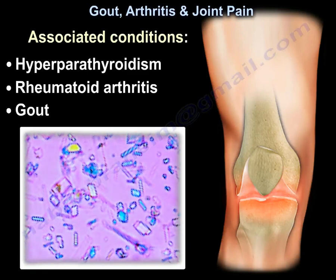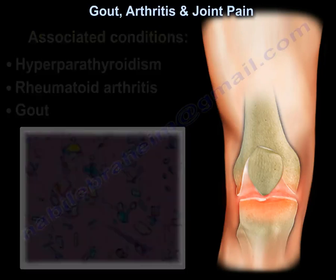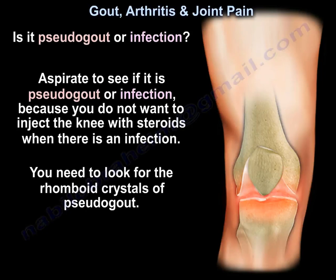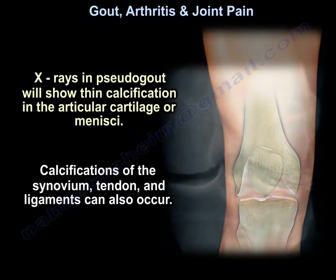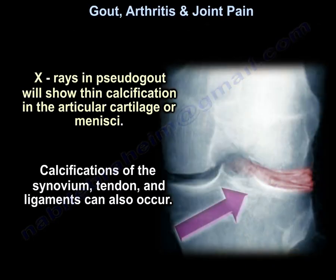Associated conditions with pseudogout include hyperparathyroidism, rheumatoid arthritis, and gout. You must aspirate the joint to determine if it is pseudogout or infection, because you do not want to inject the knee with steroids when infection is present. Look for the rhomboid crystals of pseudogout. On x-ray, pseudogout shows thin calcification in the articular cartilage or menisci; calcification of the synovium, tendons, and ligaments can also occur.